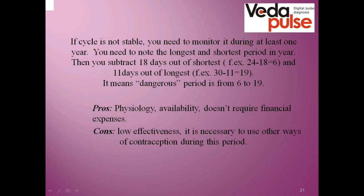If the cycle is not stable, it is more difficult, as you need to know the shortest and longest period of the year. For example, if your shortest cycle was 24 days, you subtract 18 days from it; if your longest cycle was 30 days, you subtract 11 days from it. You then get the dangerous period, which would be from the 6th to the 19th day. What we just described is natural cycle-based contraception. It has pros and cons — it is physiological, available, and requires no financial expense.